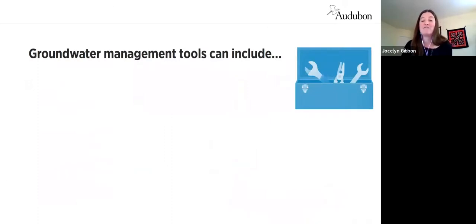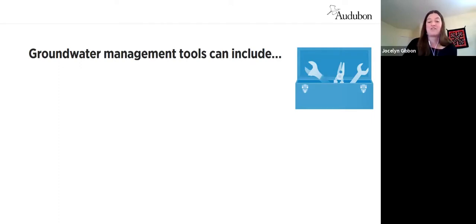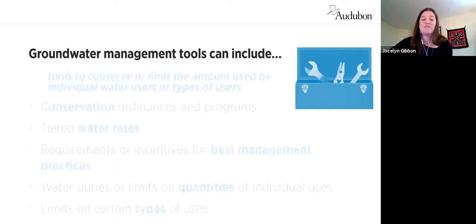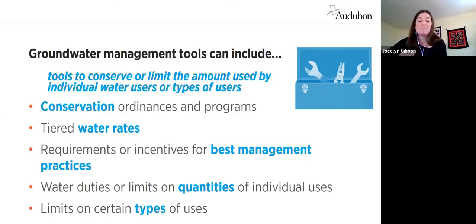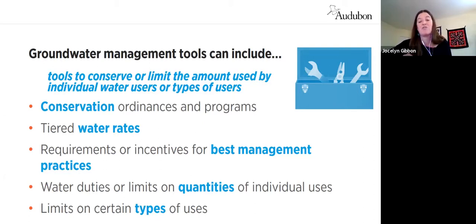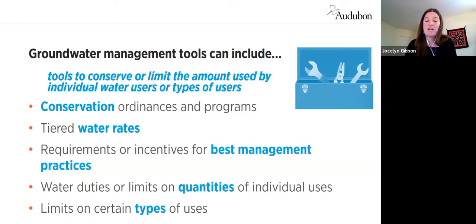This section could be a long discussion by itself, and we're not saying any of these examples are the right tools for any particular place. First, there are tools that can be used to conserve or limit the amount of water used by individual water users or types of users. Some of these are already possible for local municipalities to adopt in Arizona — for example, conservation ordinances like those in Sierra Vista, Payson, Clarkdale, Flagstaff, and Cottonwood that include recommendations or requirements related to landscaping with native or low-water-use plants. Some Arizona water providers already use a tiered rate structure where prices increase as water use increases beyond what's required to meet basic needs.